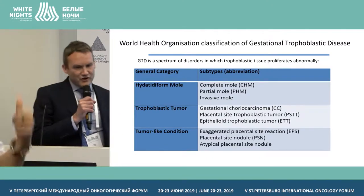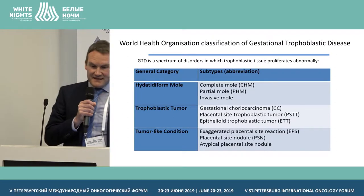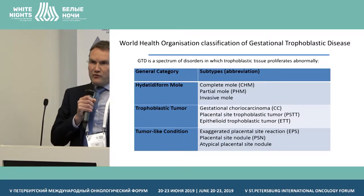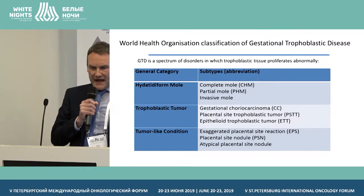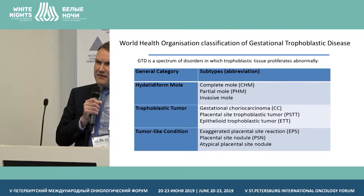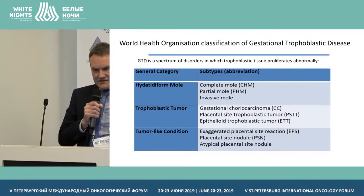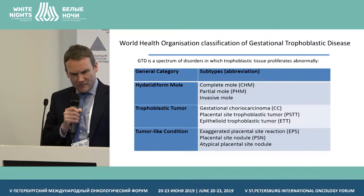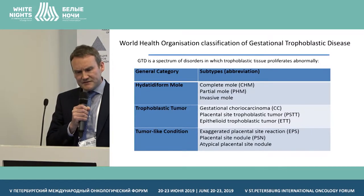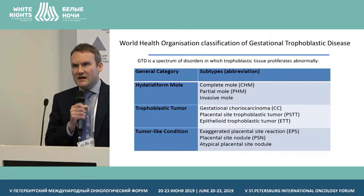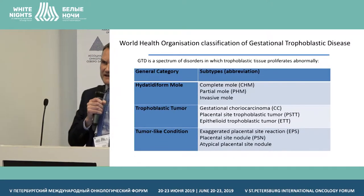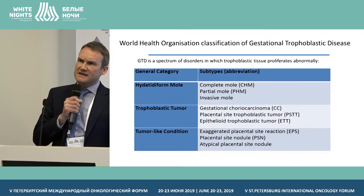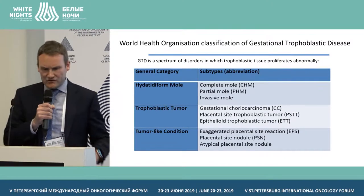Gestational trophoblastic disease is a spectrum of pregnancy-related disorders in which there's abnormal proliferation of the trophoblast. There are pre-malignant forms — complete mole and partial mole — and then the malignant forms: invasive mole, gestational choriocarcinoma, placental site trophoblastic tumor, and epithelioid trophoblastic tumor. There are also tumor-like conditions: exaggerated placental site reaction, placental site nodule, and more recently recognized, atypical placental site nodule, which has a small risk of transformation to a placental site trophoblastic tumor.